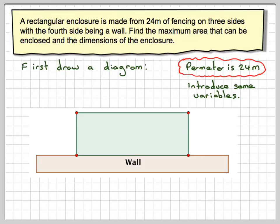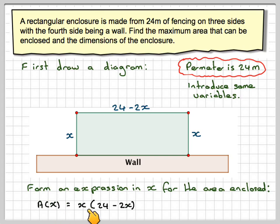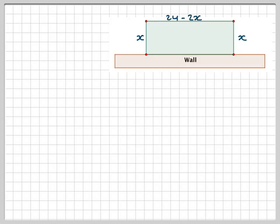So let's just move along a little bit. So I'm annotating my diagram x, and this will also be x of the same length. And we just said this has to be 24 minus 2x, because the perimeter of the fence is 24. And then form an expression in x for the area enclosed. We're going to have A(x) equals x times 24 minus 2x, and we can expand that. 24 times x is going to be 24x minus 2x squared.